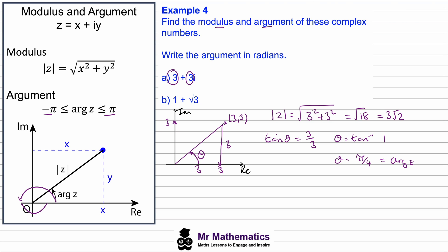So for part b, again if we draw our Argand diagram, we've got 1 + √3i. So 1 on the real axis, √3 on the imaginary axis.